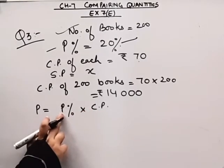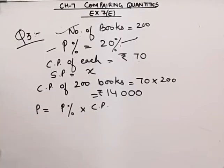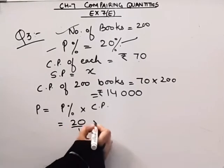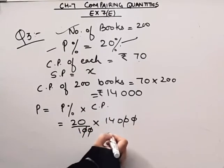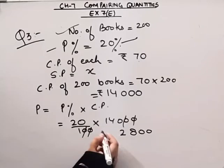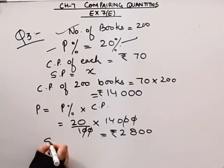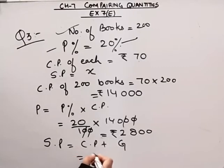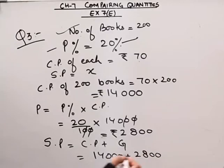The profit percentage formula gives us profit as 20 by 100 into 14,000, which equals 2,800. We know the formula: selling price is equal to cost price plus gain, so that is 14,000 plus 2,800.